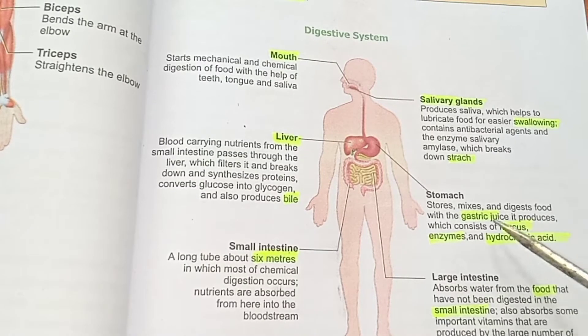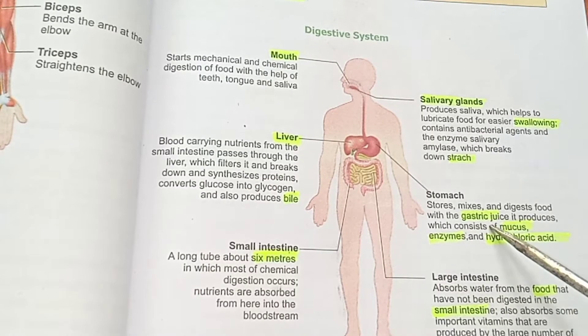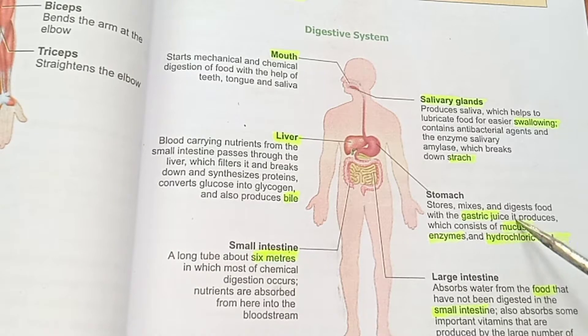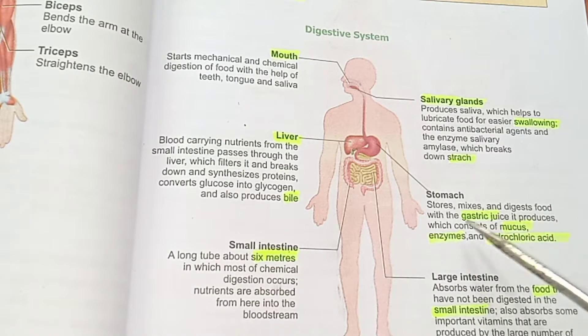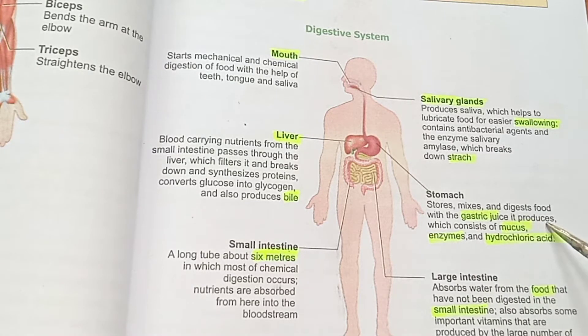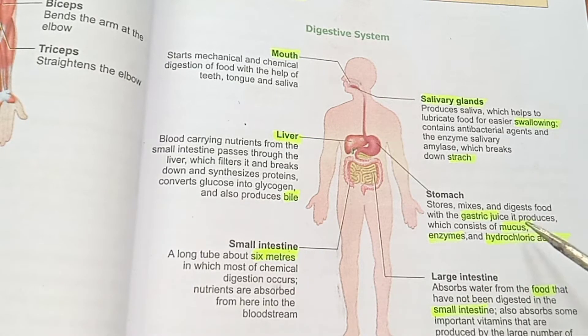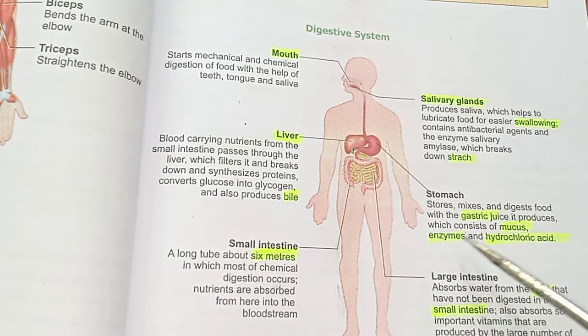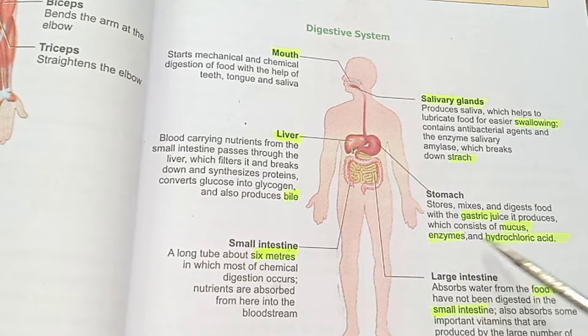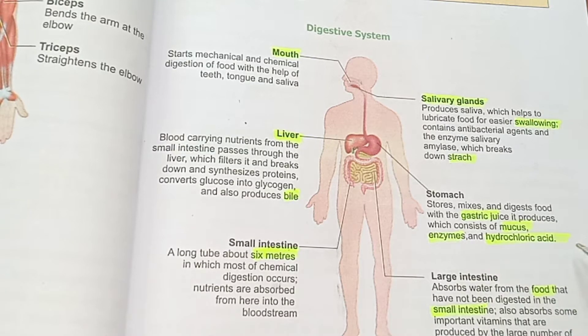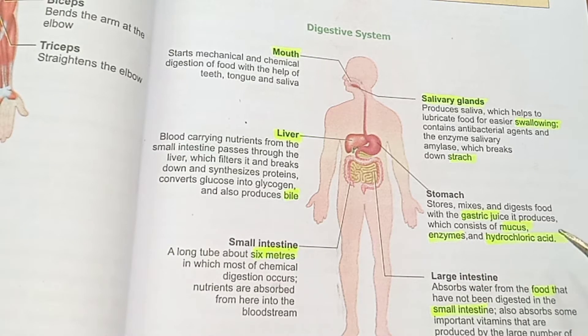The stomach stores, mixes, and digests food with the gastric juice it produces, which consists of mucus, enzymes, and hydrochloric acid.